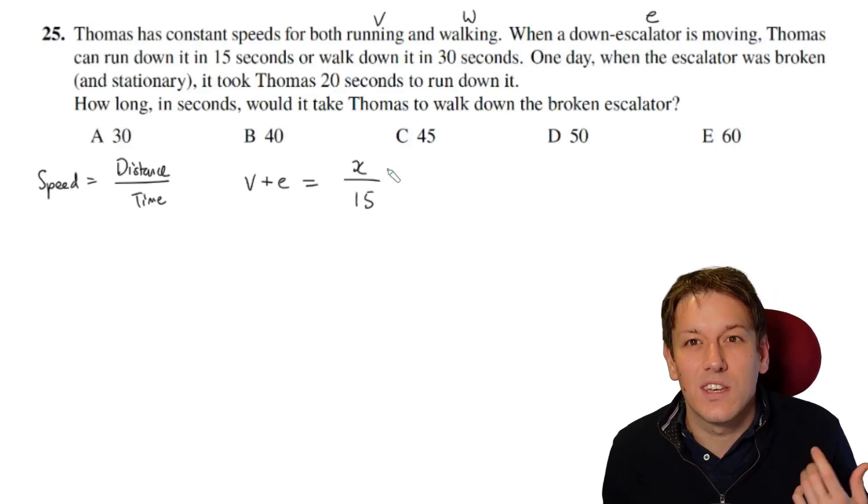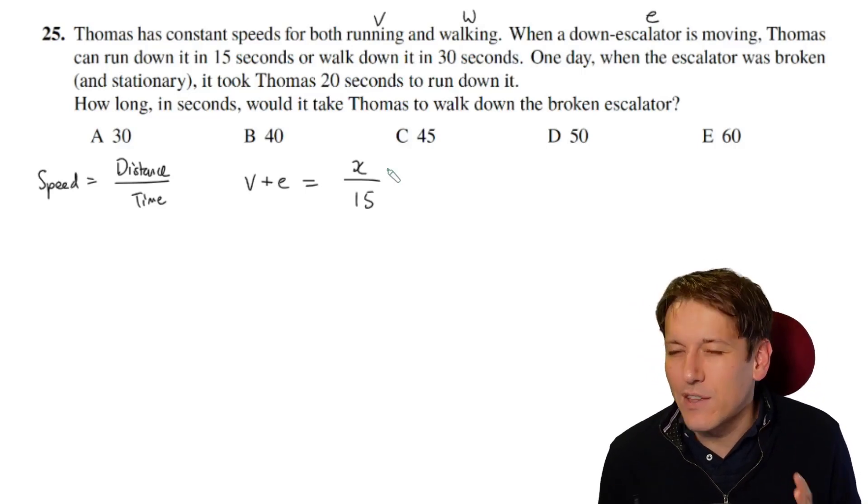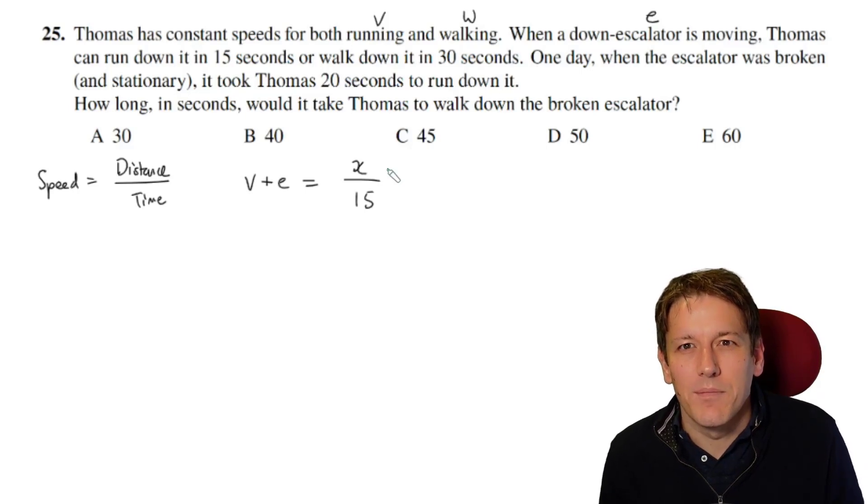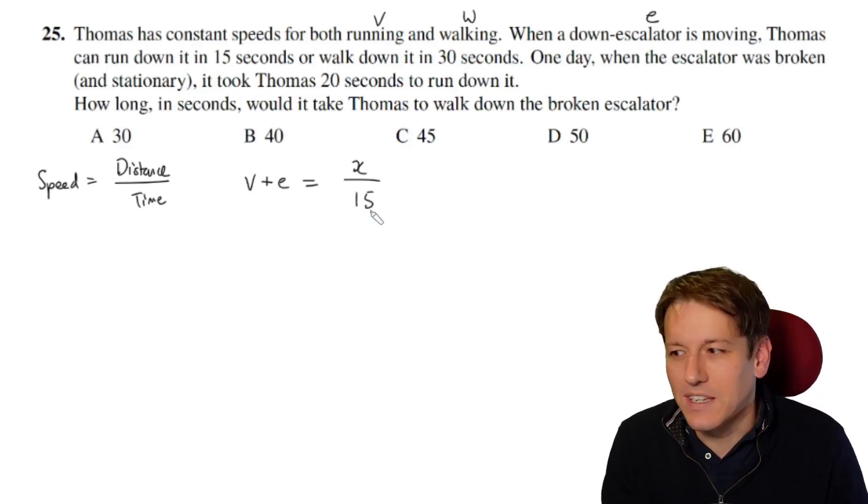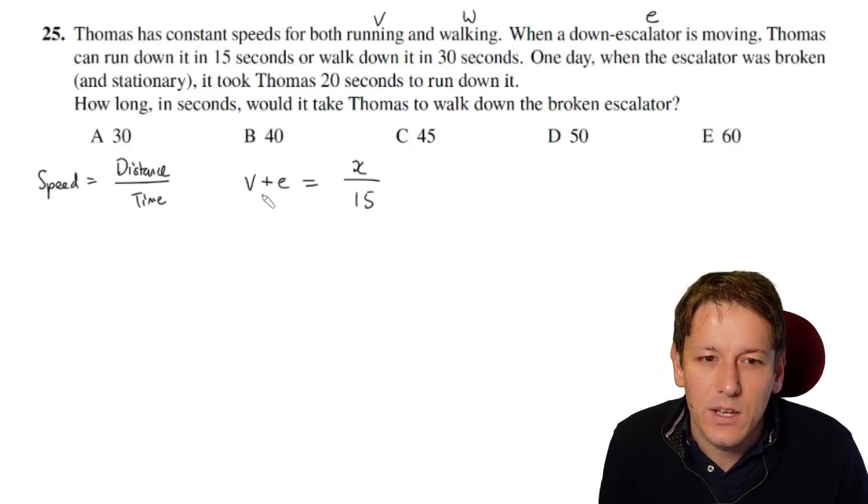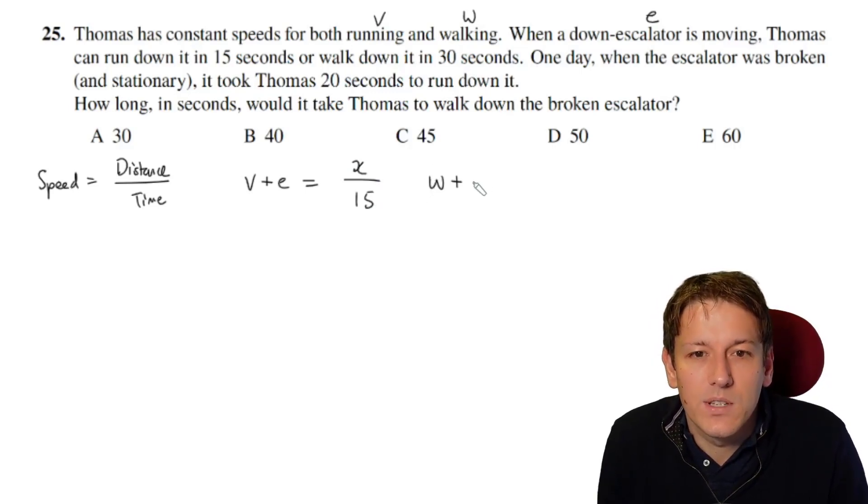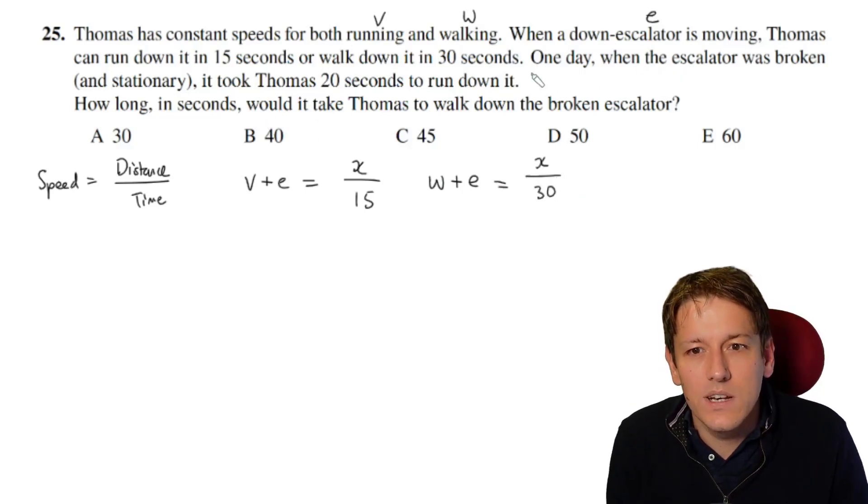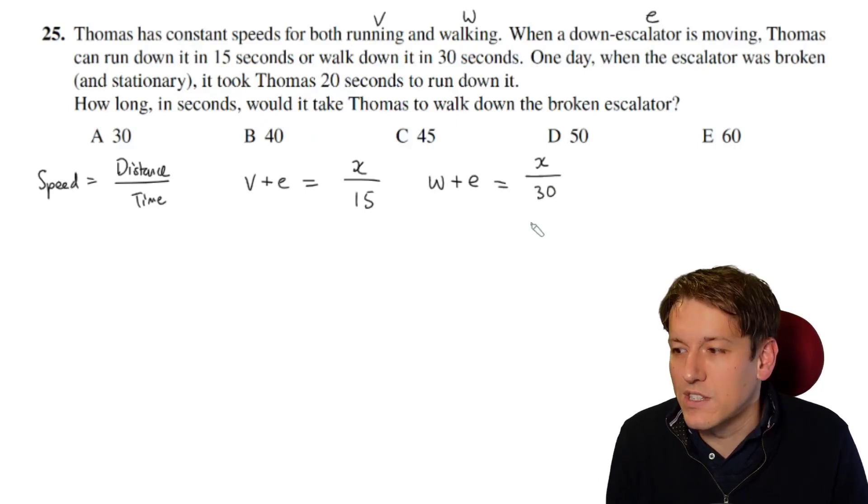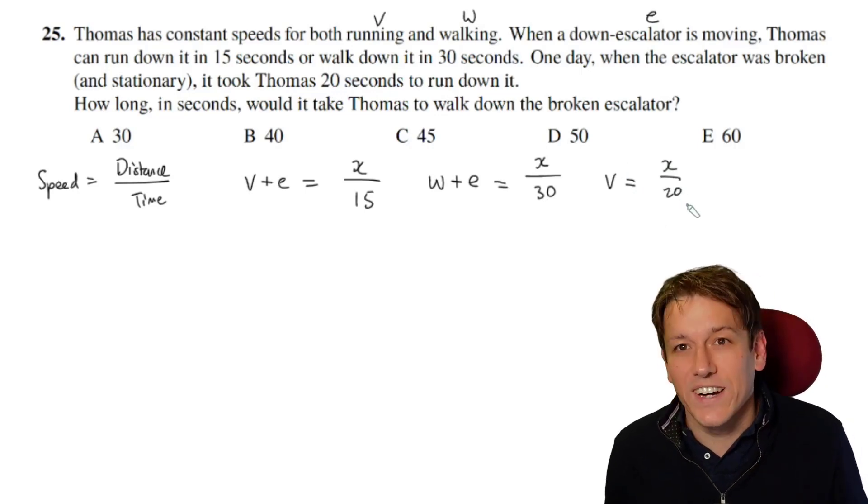If you want to here, you could just give x a number, you could say x is 1 or 100 or whatever makes it convenient. Because if you think about it, the length of the escalator actually can't really matter for this question. Anyway, we'll leave it as x just to be reassuring here in case we're not confident that we could take any value of it. Because that requires quite a lot of intuition, I think. And we'll be able to do it quite neatly anyway. So that's v plus e is x over 15. And he can also walk down it in 30 seconds. So his speed walking down it would be w plus e, so that'll be x over 30. And it says when the escalator was broken, it took him 20 seconds to run down it. So that means he's just running down it. So his speed will be v. So we know that v is equal to x over 20.